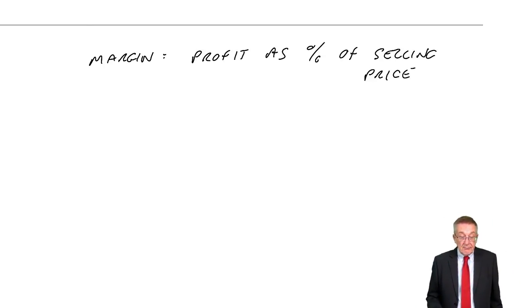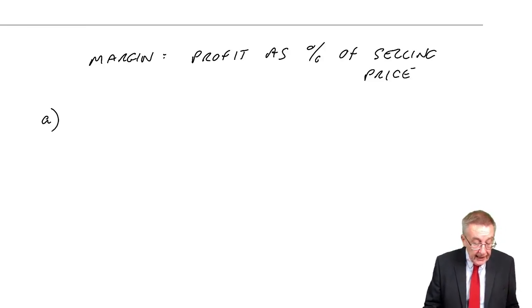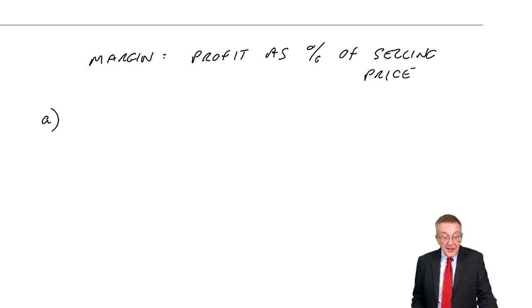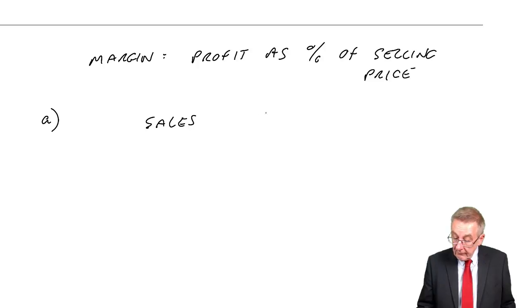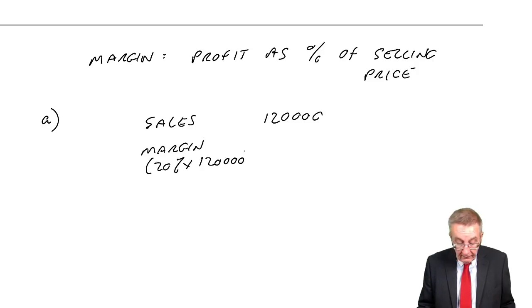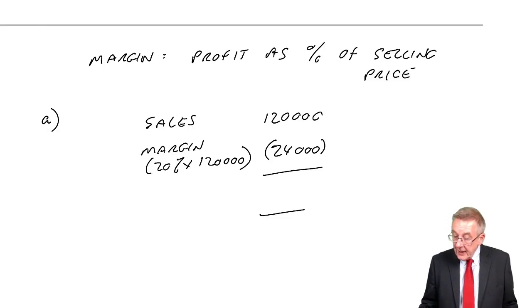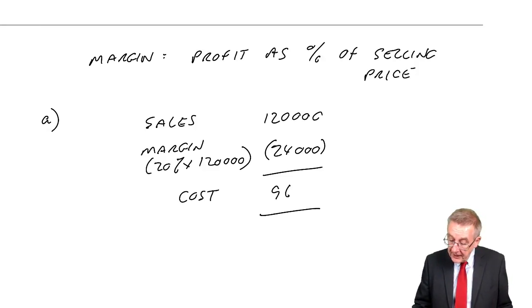And so, look at example two. First of all, A. Peter has sales of 120,000. His gross profit, that's another way you can express it, gross profit is 20%, is another way of saying the margin is 20%. If the margin is 20%, what is the cost of goods sold? We'll find the sales, 120,000. The margin, 20% of sales, 24,000. And so if they're selling at 120 and the profit is 24, the cost of the goods sold must have been 96.